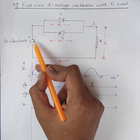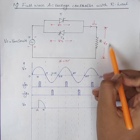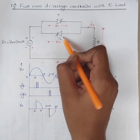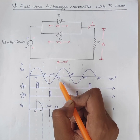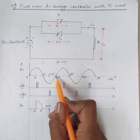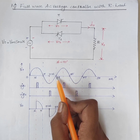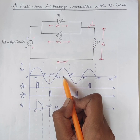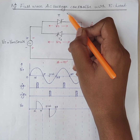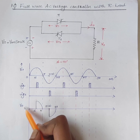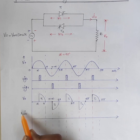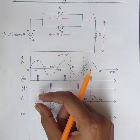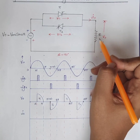That is from positive to negative. At omega-t equal to 2pi, T2 is subjected to reverse bias and is therefore commutated. From 2pi to 2pi plus alpha, both T1 and T2 are off, acting as open switches. Again at 2pi plus alpha, T1 is triggered and supply voltage appears across the load. The output current waveform is the same as the output voltage waveform with reduced magnitude, because the load is resistive in nature.